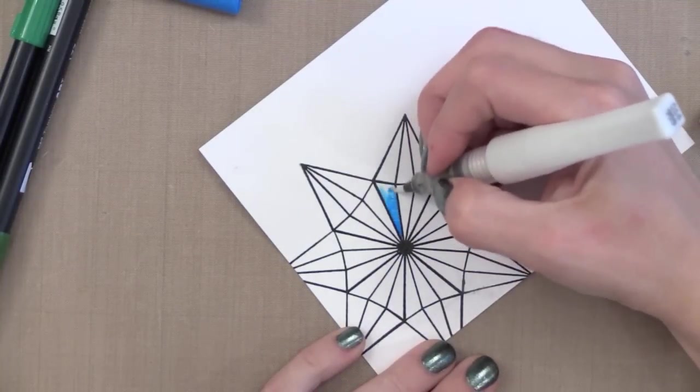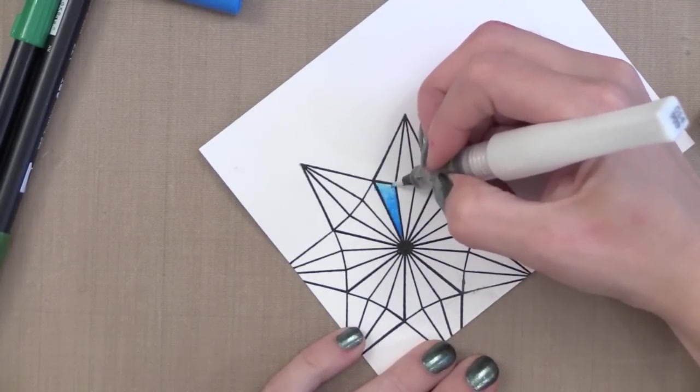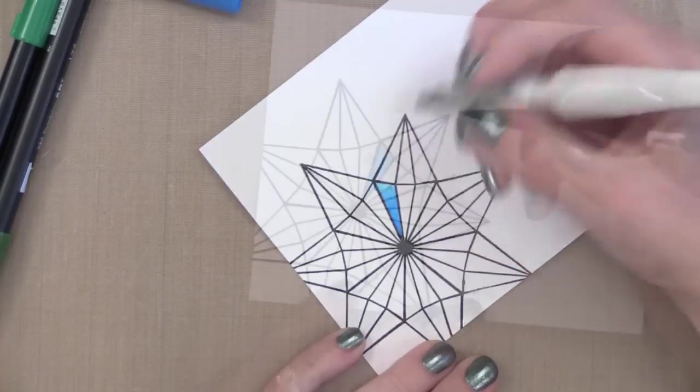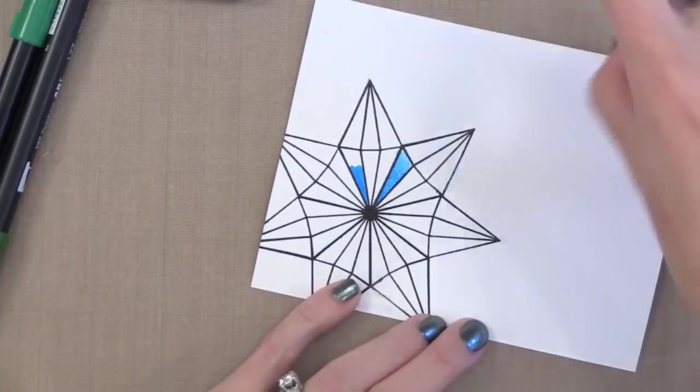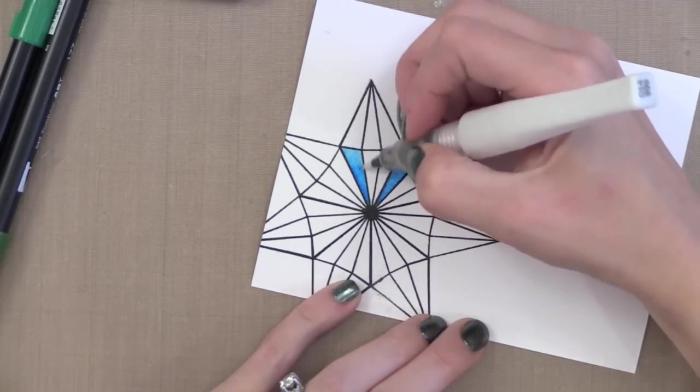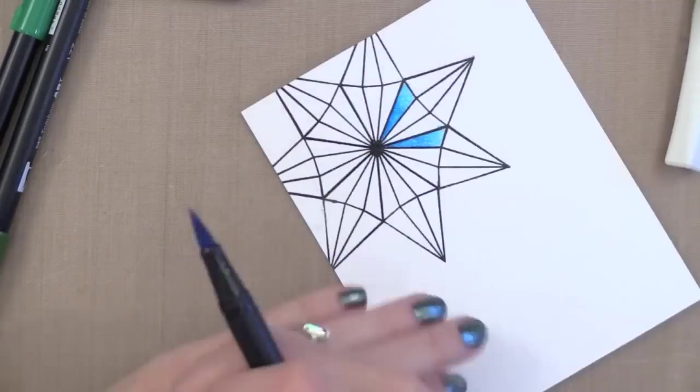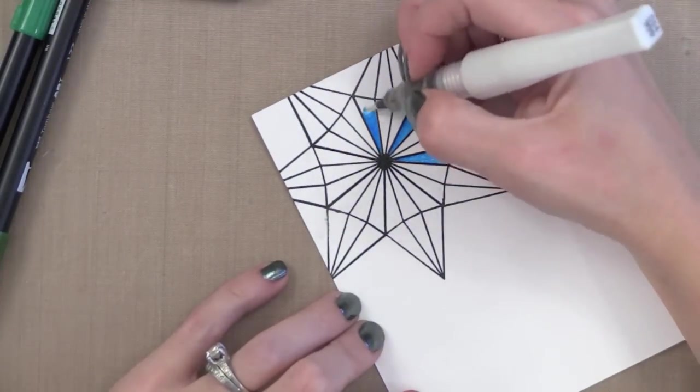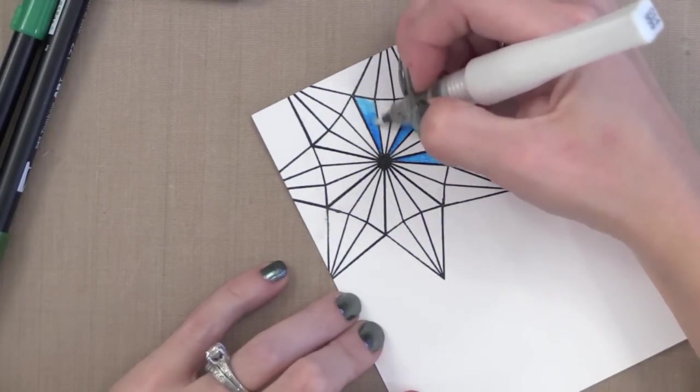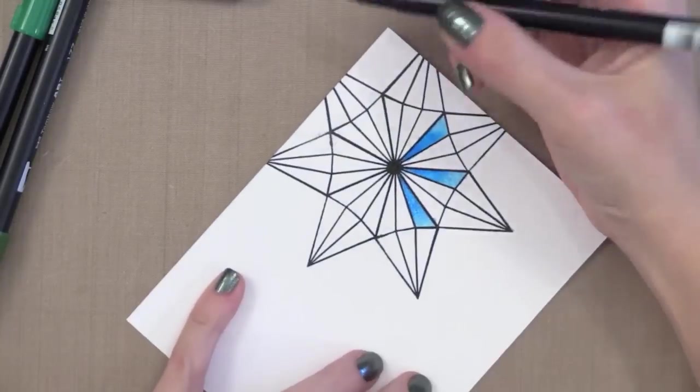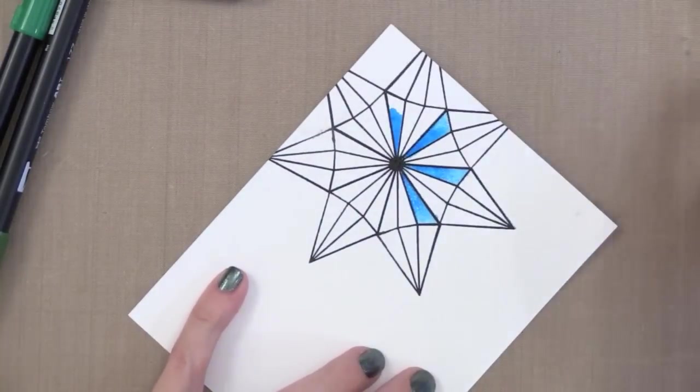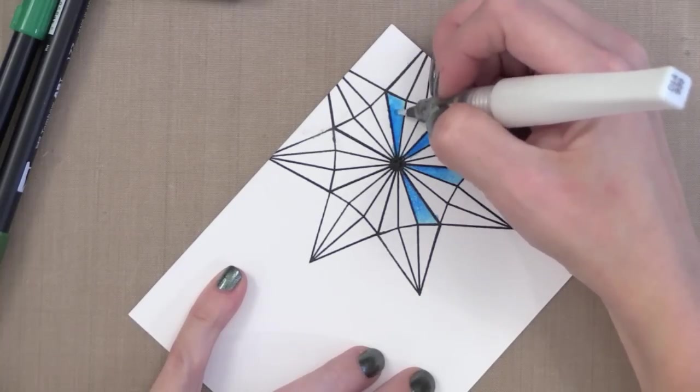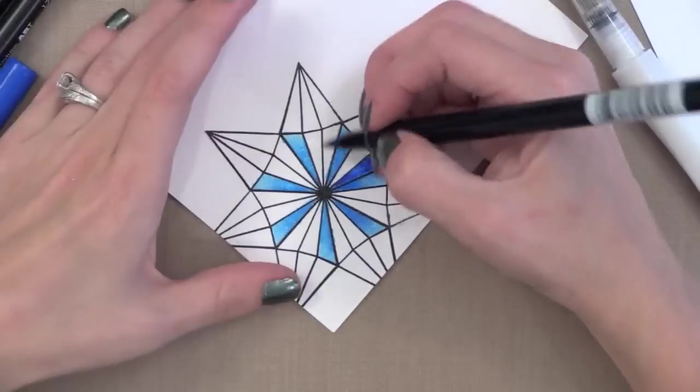What I do is I put the marker down onto my project where I want the darkest color to be. Then I use the Wink of Stella as a wet medium to kind of pull that color towards the other parts of the area I want to color. It will be lighter there. So you get this ombre effect. It's darkest where you put the marker down and lightest where you kind of pull the color out with your Wink of Stella. So essentially I'm using my Wink of Stella as a water to create a water color look with my markers.